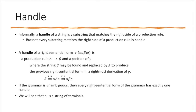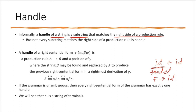Now, a handle. Informally, a handle of a string is a substring that matches the right side of a production rule. For example, if you have id + id, then id can be treated as a handle if we have a production rule F → id. If the body of the production rule and a substring in the given string are the same, we call that substring a handle.